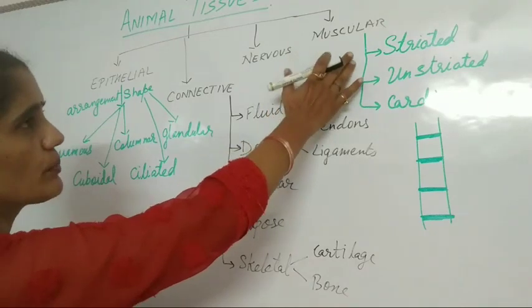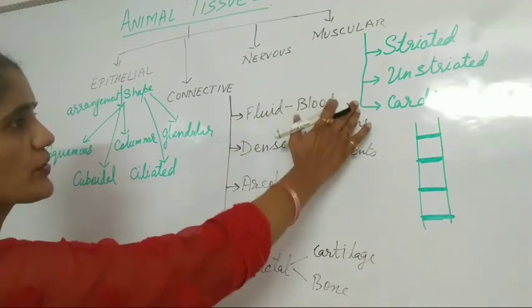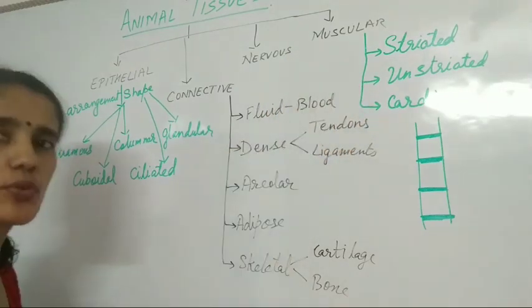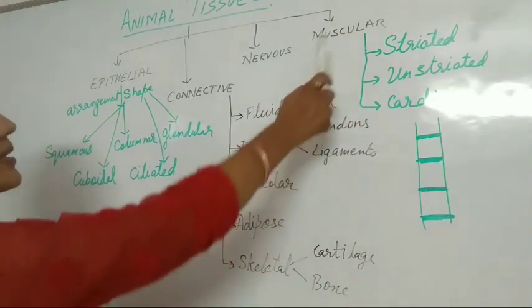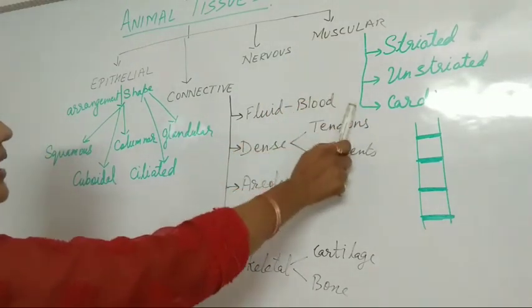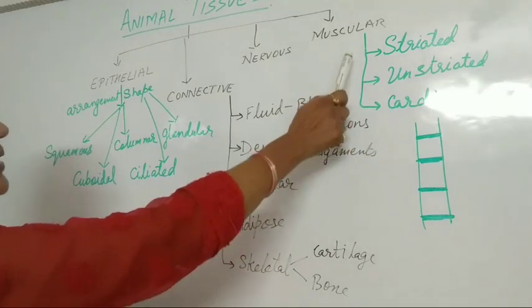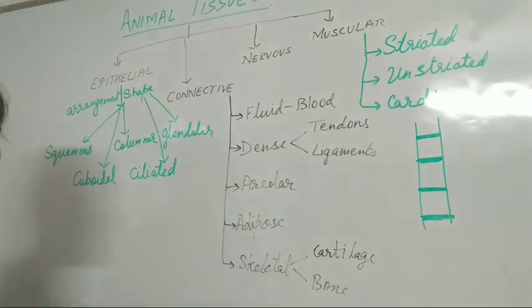And after that, muscular tissue is further divided into three types: cardiac, striated, and unstriated.